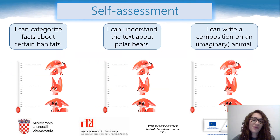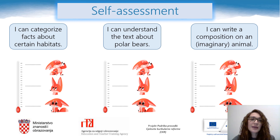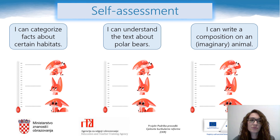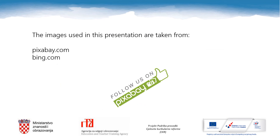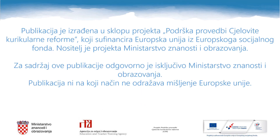And bit by bit, we've arrived at the very end of our lesson. It's self-assessment time. Color these thermometers up to the point of how you feel about today's lesson: I can categorize facts about certain habitats. I can understand the text about polar bears. And I can write a composition on an imaginary animal or an ordinary animal. And that's it for today. I hope that you have enjoyed today's lesson. Goodbye!